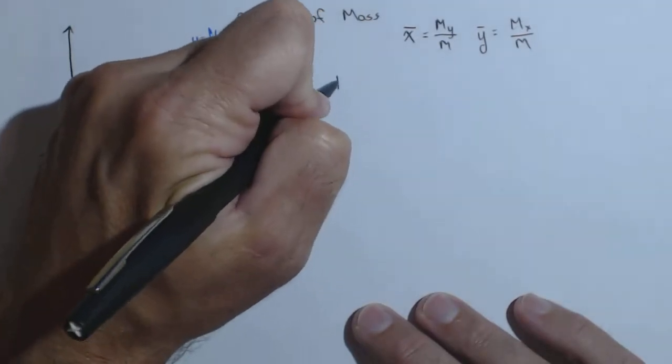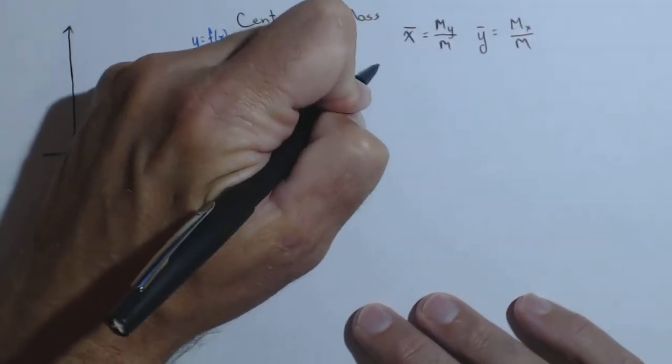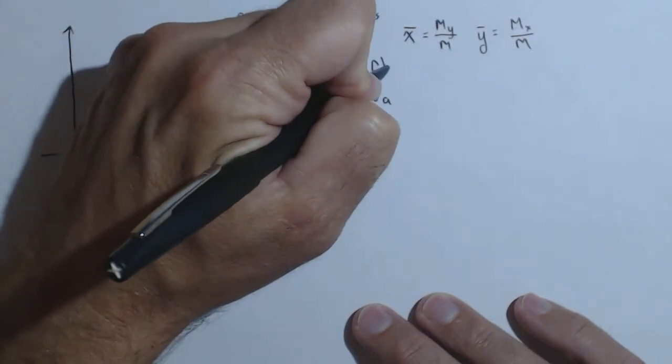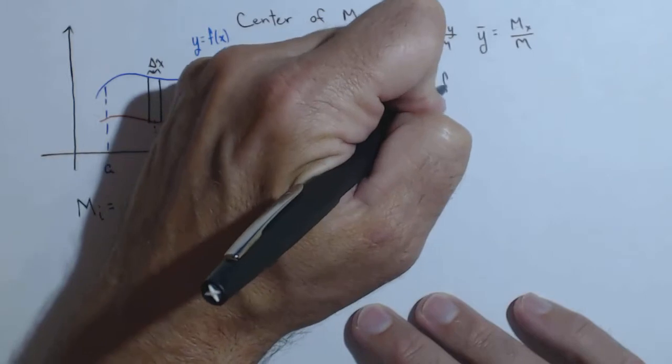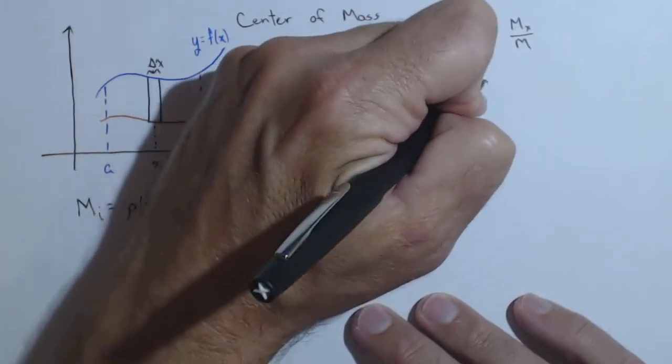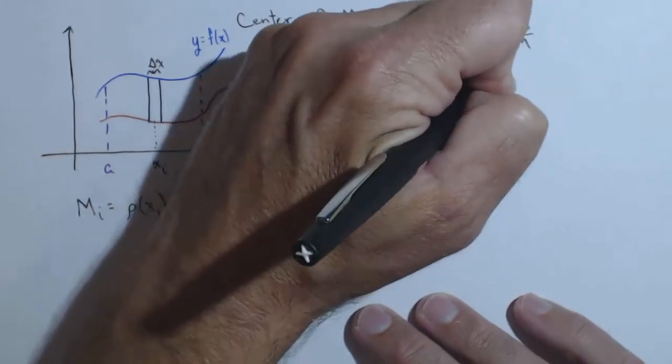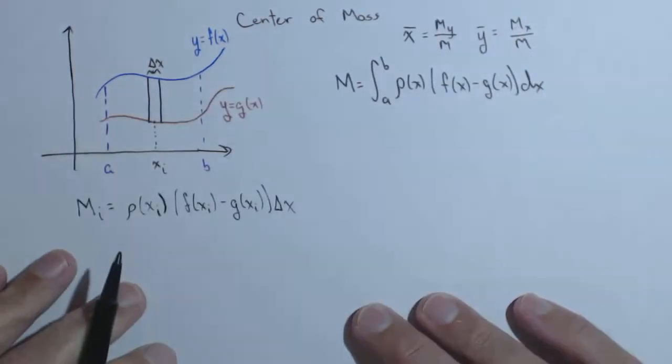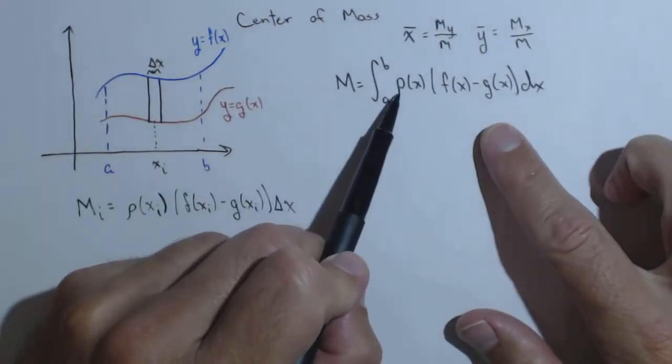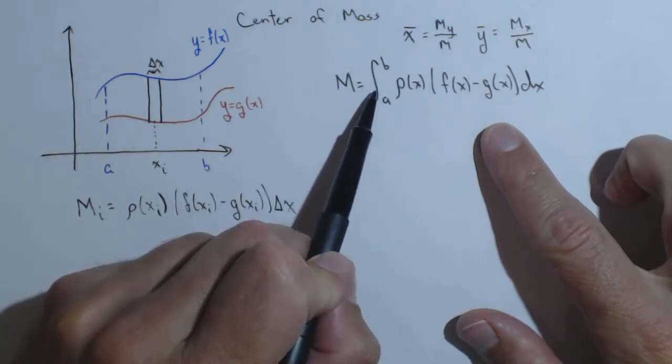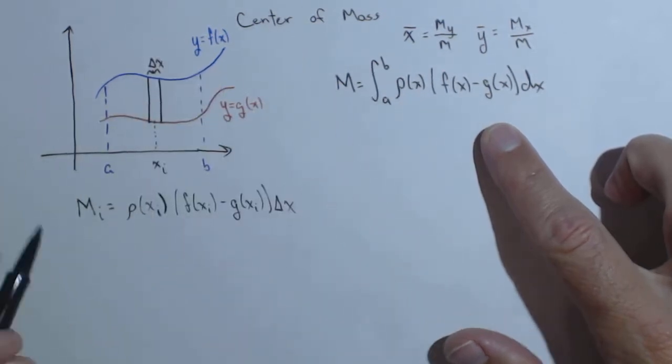Now, setting that up as a definite integral, we'll come over here. Then, m is going to be the integral from a to b of rho of x times f of x minus g of x dx. And now, this is assuming that rho is a function of x, the density is a function of x. If it's not, you can pull it out of the integral and deal with it later.